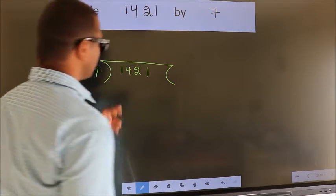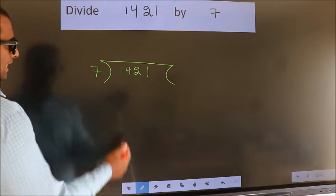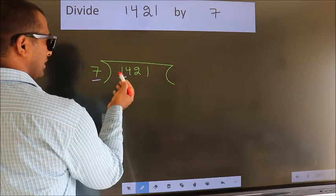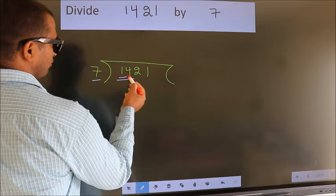This is your step 1. Next, here we have 1, here 7. 1 smaller than 7. So we should take two numbers, 14.